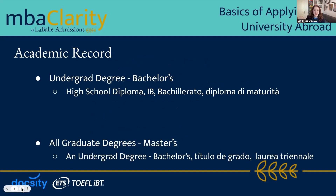In order to apply to these programs, you need what I call the basics. First is an academic record — proof that you have an education. If you're applying for an undergraduate degree, you need a high school diploma, an IB, or a bachillerato. If you're applying for a graduate degree, whether pre- or post-experience, you need an undergraduate degree already. The academic record is very important because universities abroad want to know if you have the academic ability to succeed in their program.